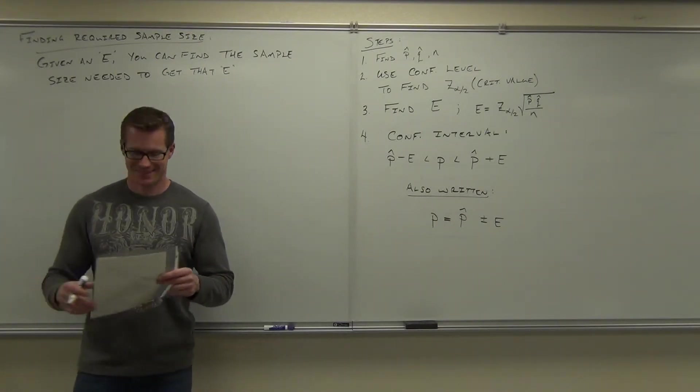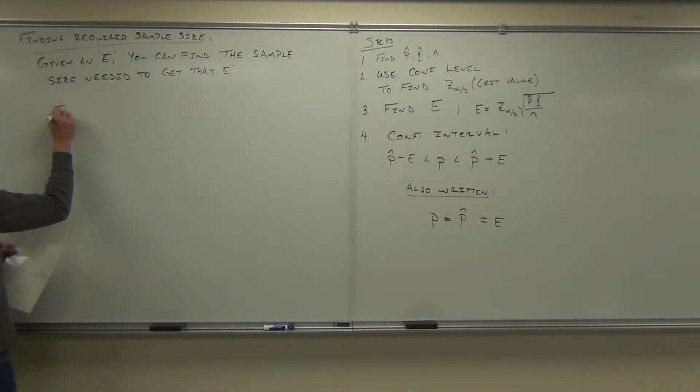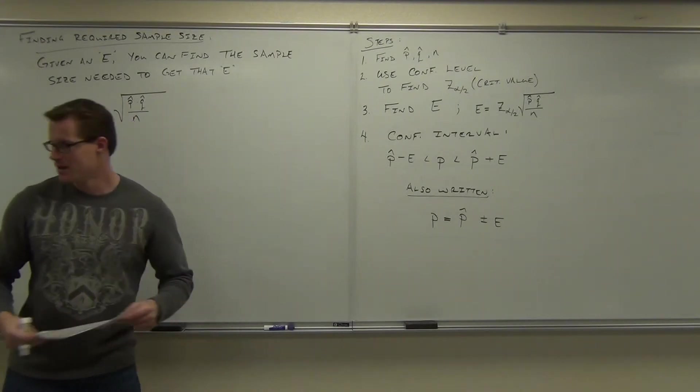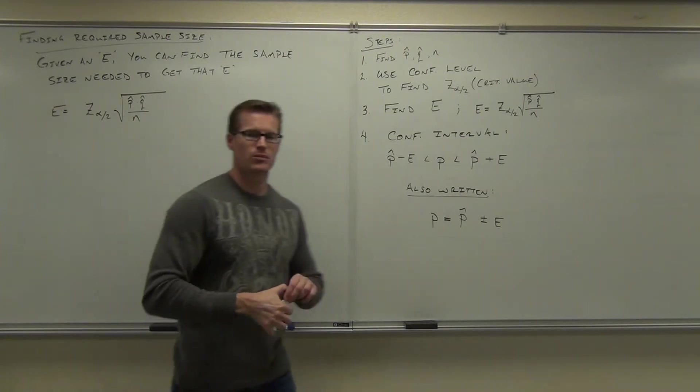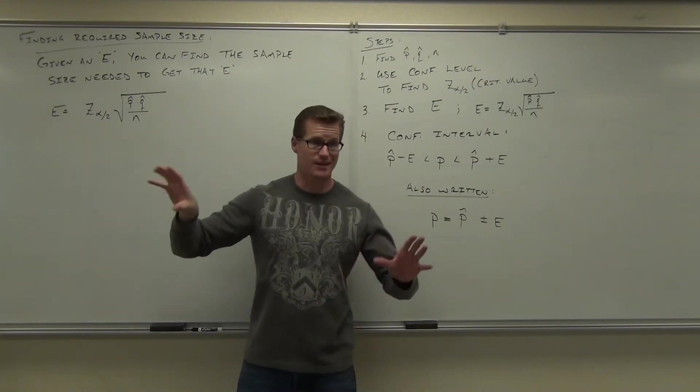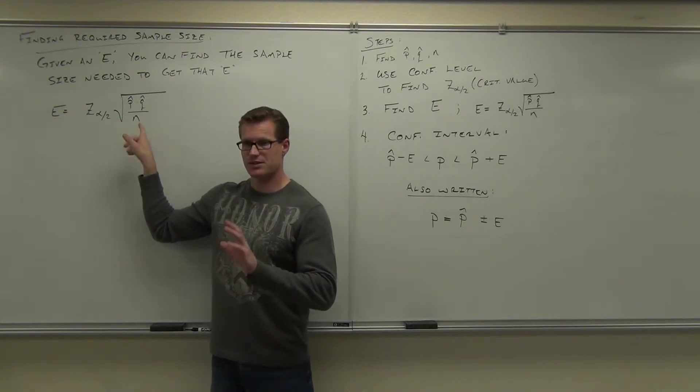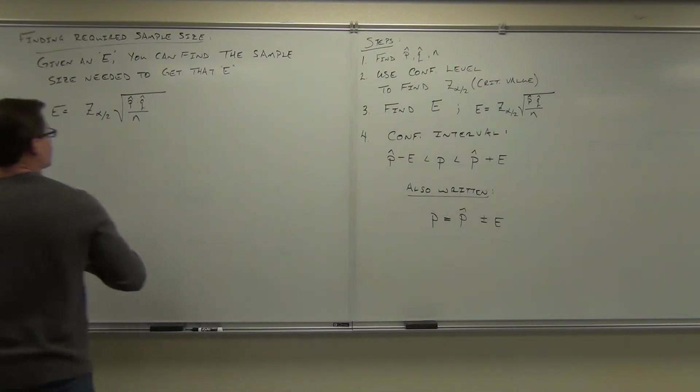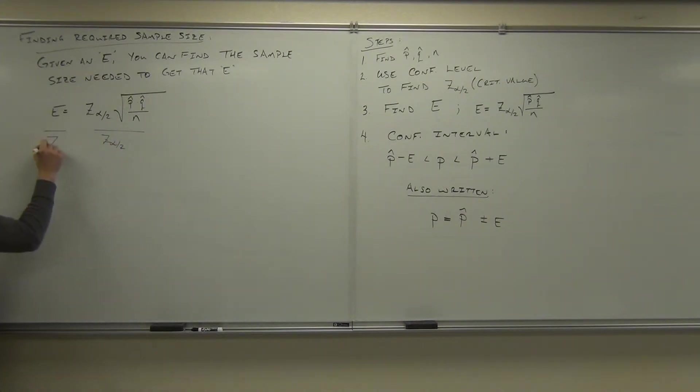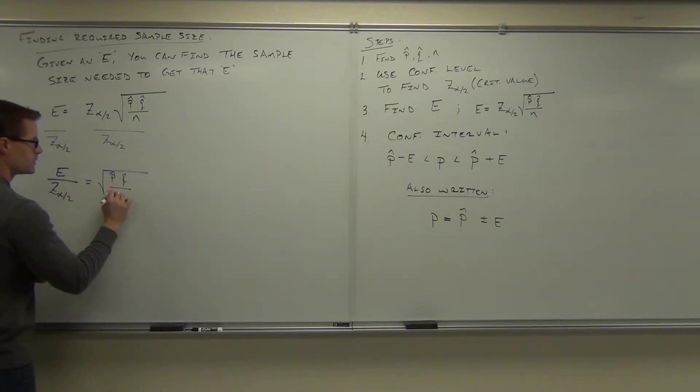We're going to do quick algebra. What letter are we trying to solve for? N. We're trying to solve for N. I want the sample size out of this thing. You're going to be given this number, find what this needs to be to make it happen. What do I need to do to get rid of N? Divide. So E over Z alpha over 2 equals the square root of P hat Q hat over N.